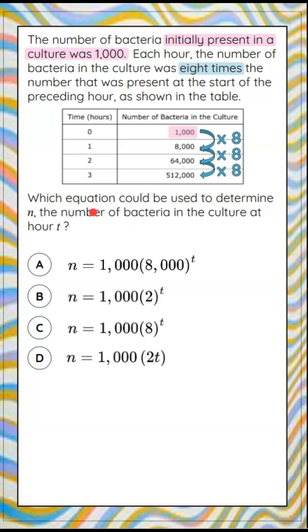We're asked which equation could be used to determine N, the number of bacteria in the culture at hour T, meaning any hour. If we plug in the number we want, five hours, we replace T with that, and we're given four answer choices.